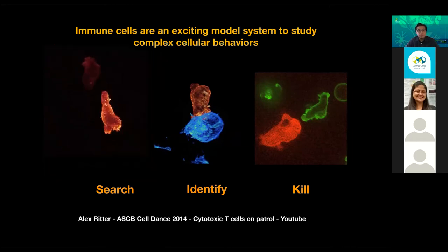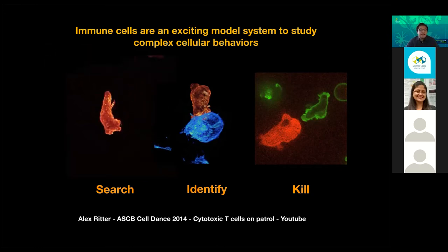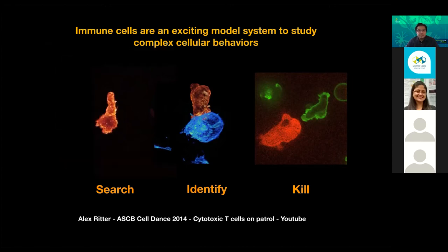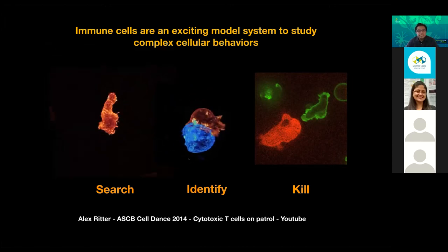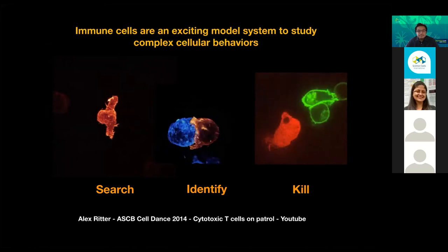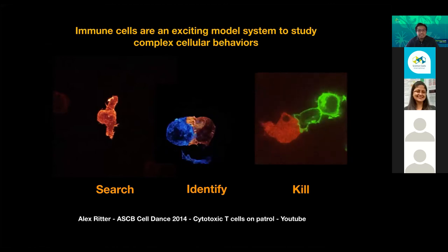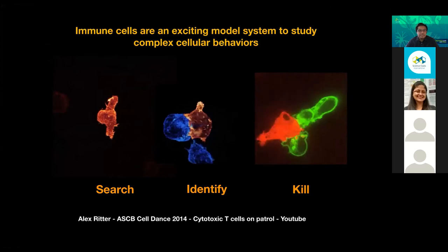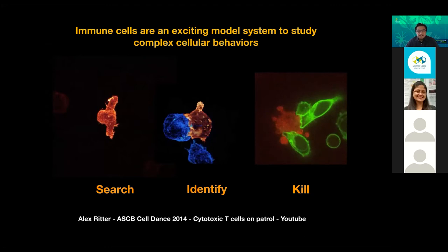The immune cells, and in particular cytotoxic T-cells, are a really nice model system to study complex cellular behaviors. They can go around our bodies and search for viruses, bacteria, or any other threat. They perform very complex and sophisticated identification processes, and when the T-cells encounter something foreign that they know they have to eliminate, they can launch these very powerful killing programs. If you're interested, you can look up the 'cytotoxic T-cell on patrol' video on YouTube.